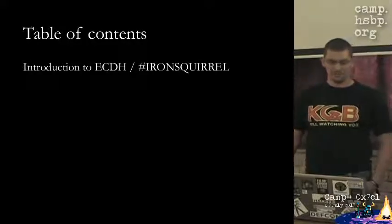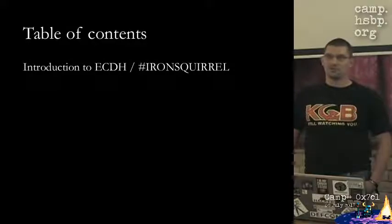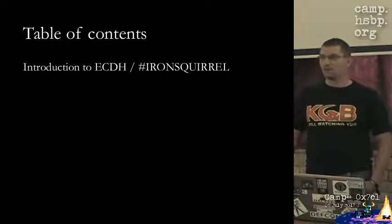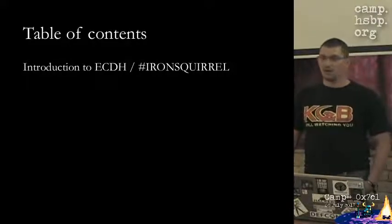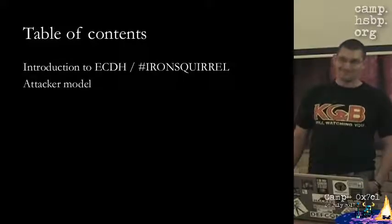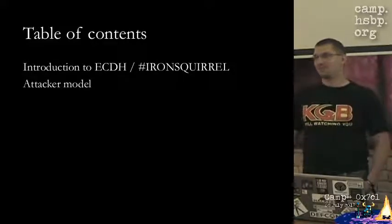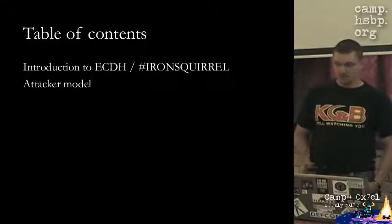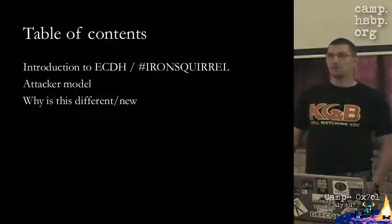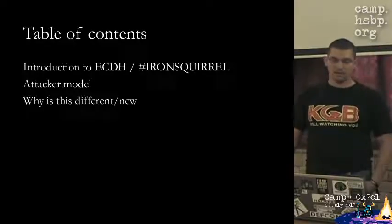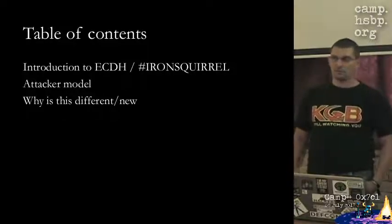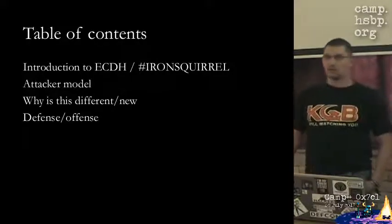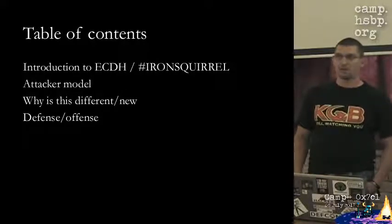So I'm always giving you a table of contents of what I'm going to talk about. First, I will introduce you to the elliptic curve Diffie-Hellman key agreement protocol and how I use this in my Iron Squirrel project. I will talk about the attacker model, why this tool is different from previous things, and both defense and offense.